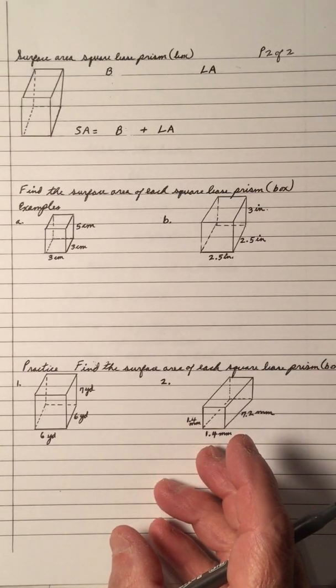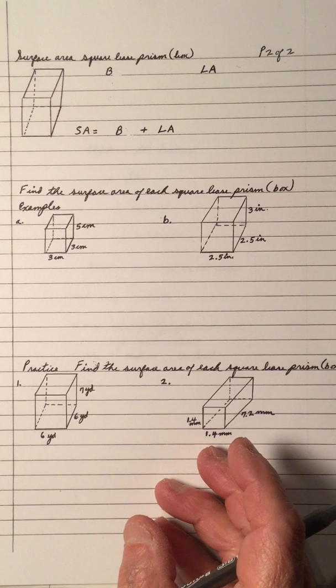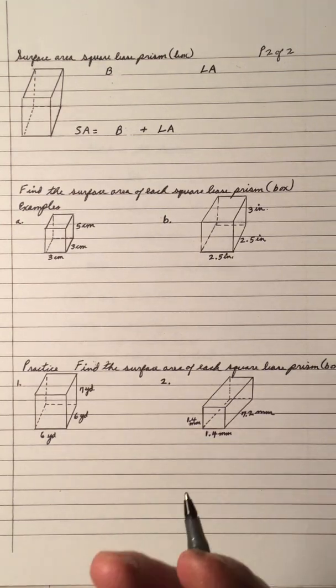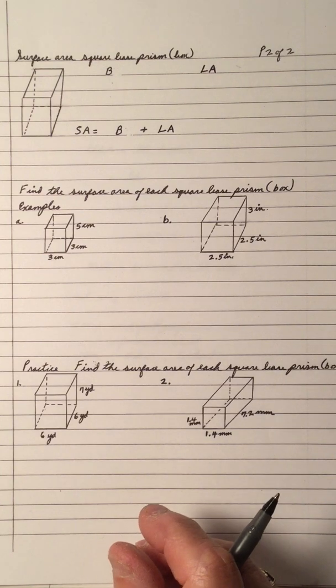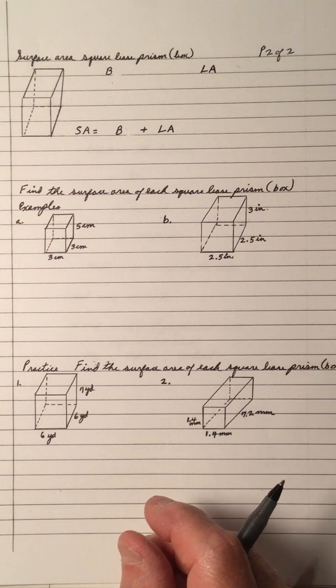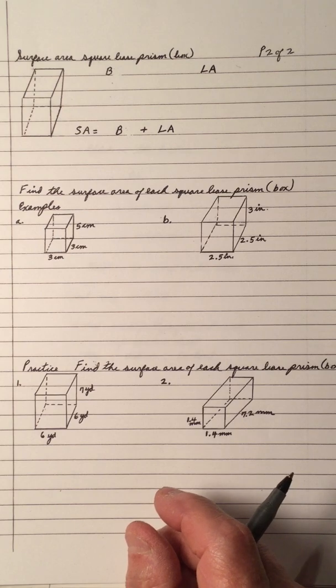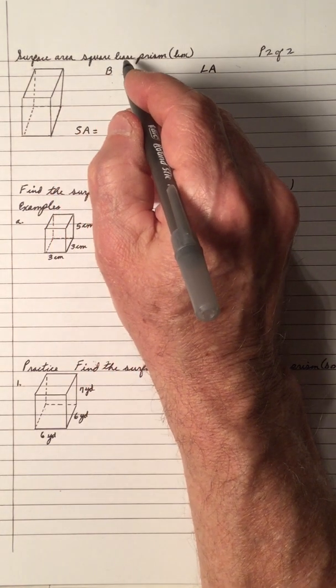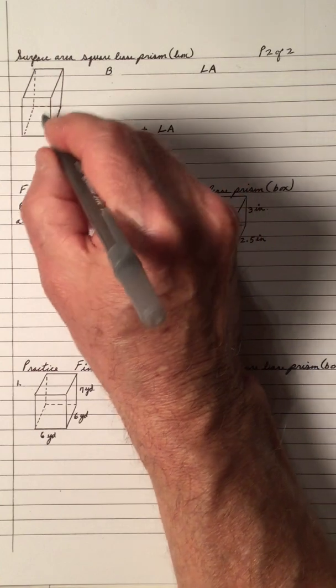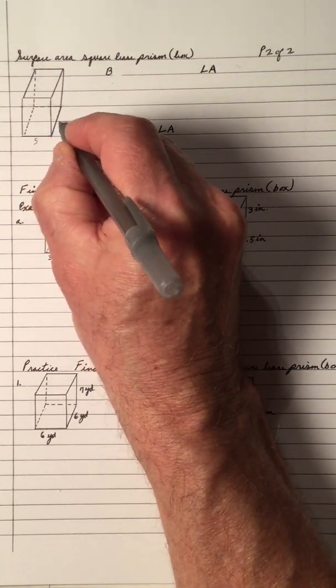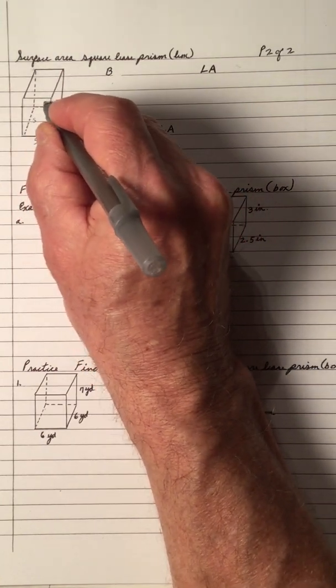A square prism is similar, and working the surface area of a square prism is similar to working out the area of a rectangular prism. But it's a little bit easier in that a square prism has a base that's all sides equal, making it a square.